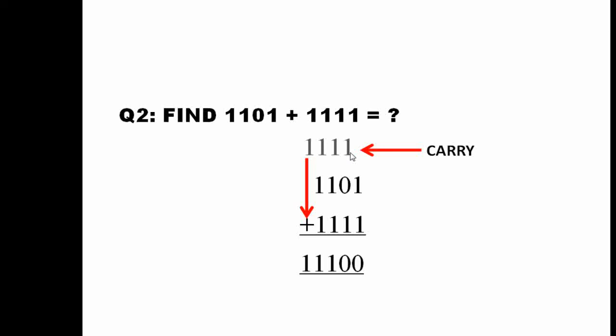Now you sort out the second column. Again 1 and 1 is 0 carry 1. Now adding the third column 1, 1 and 1. When you have three 1s answer is 1 and a carry of 1.